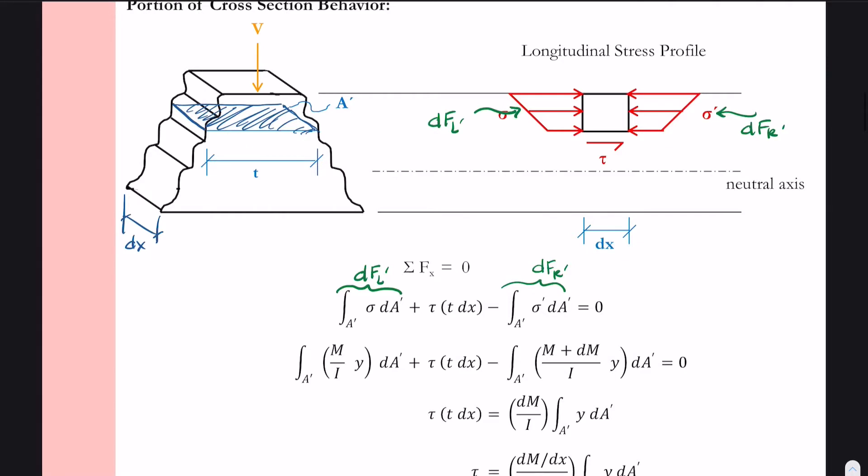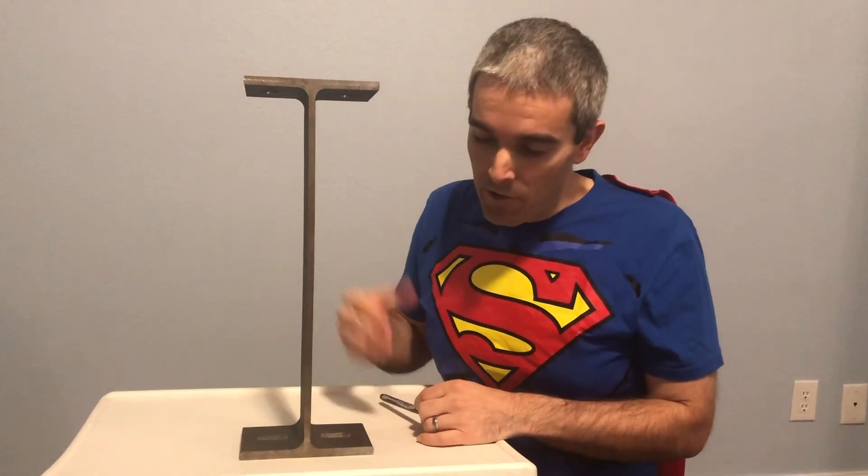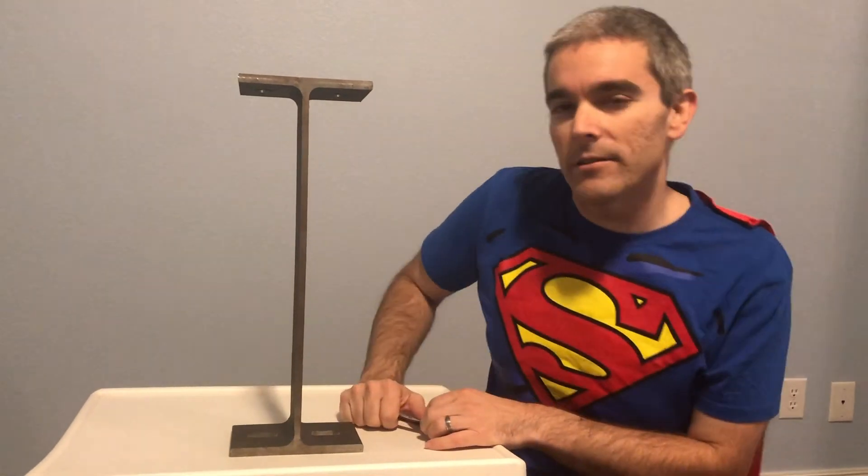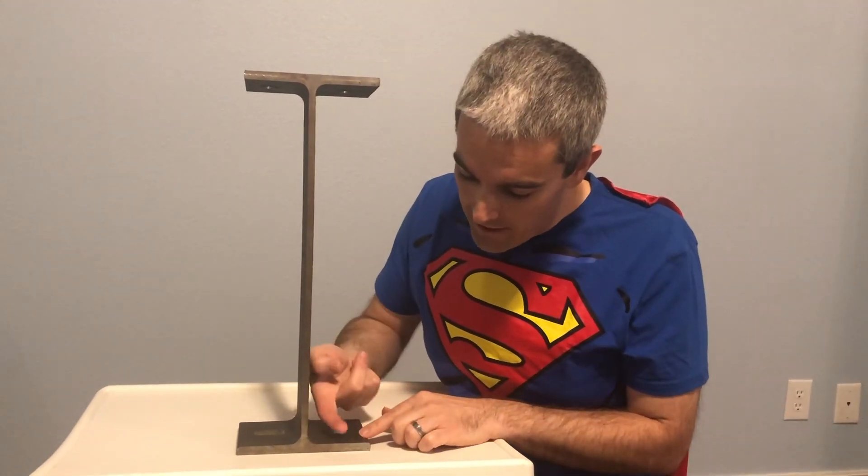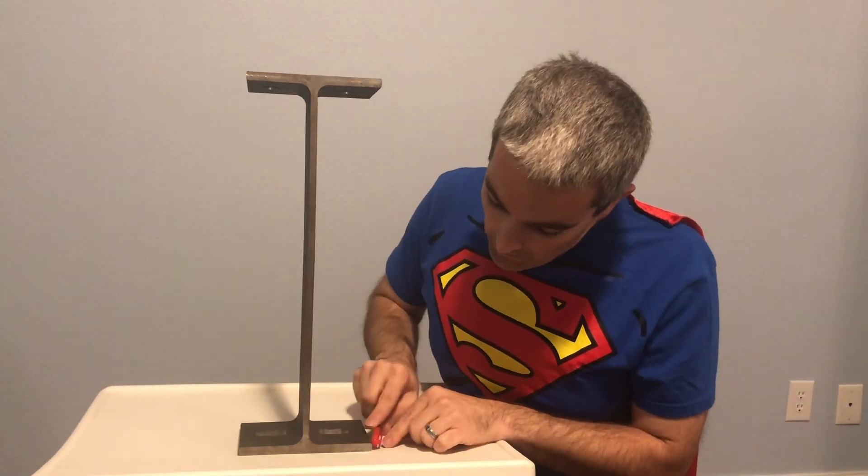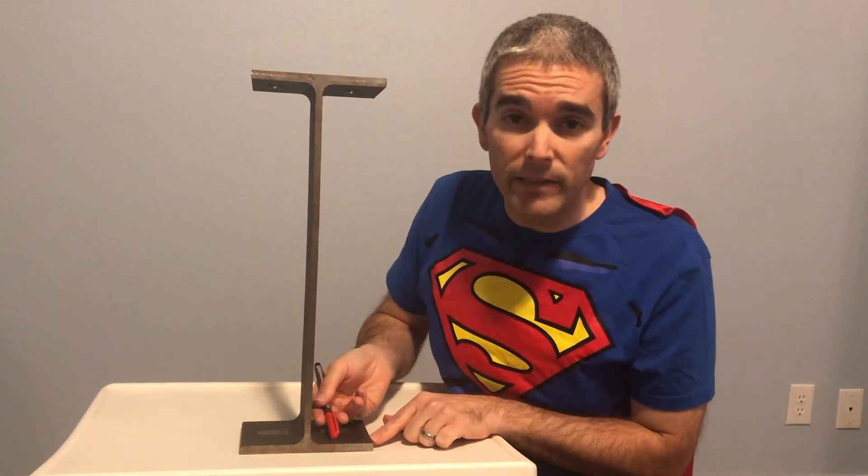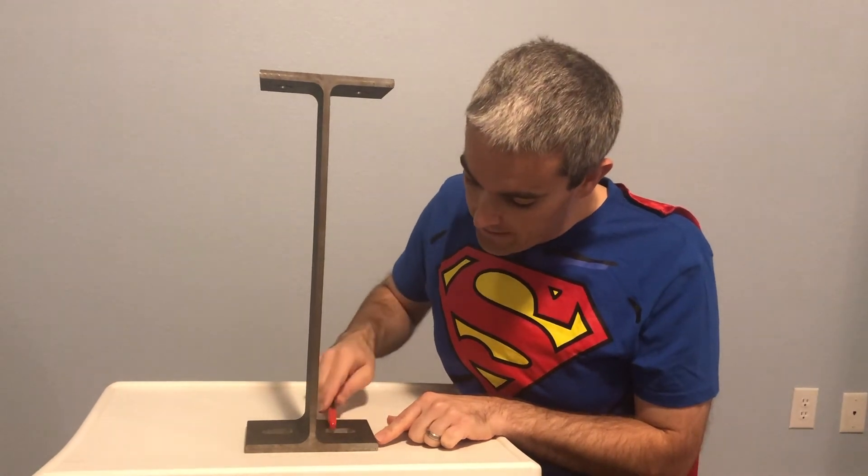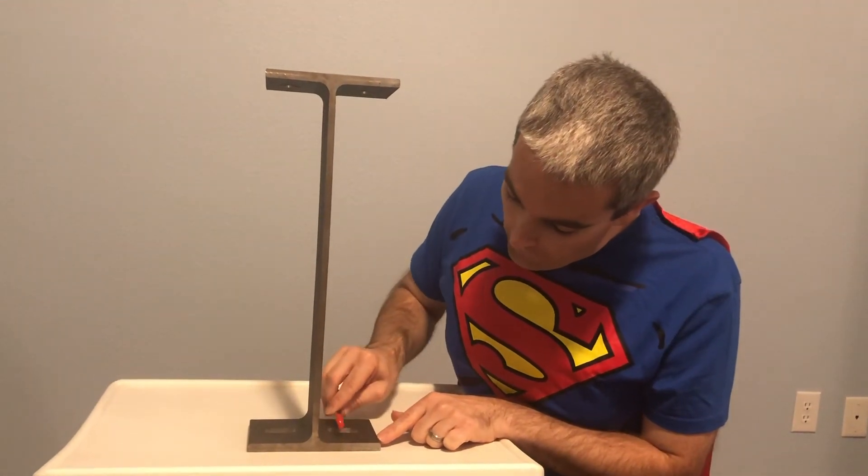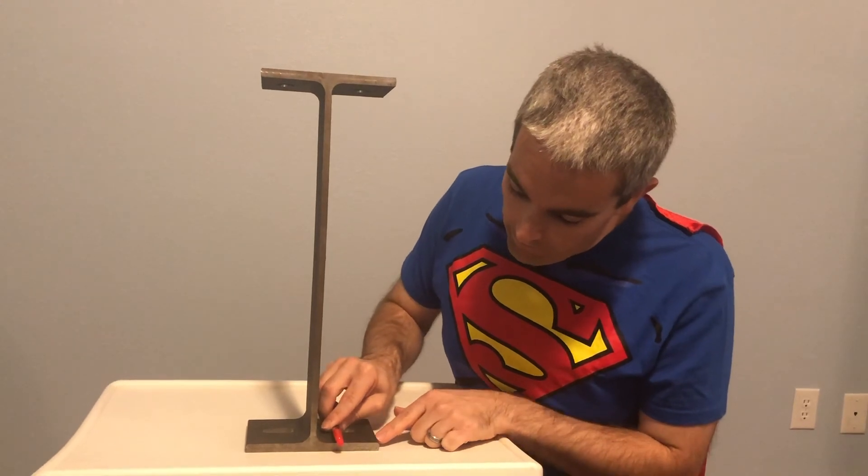Recall that because dF_L prime is not the same as dF_R prime, we need to have the additional term tau times t dx to balance out our forces in the longitudinal direction of the beam. So I still need to have this longitudinal shear stress, and therefore the shear stress forms on the side of the elements and not on the free edge side but in the material. It forms on the side through the thickness here.